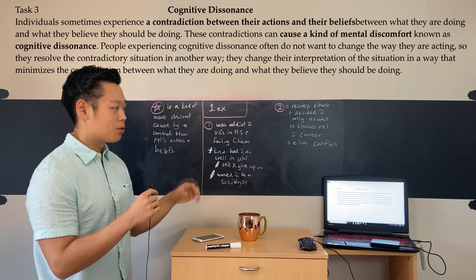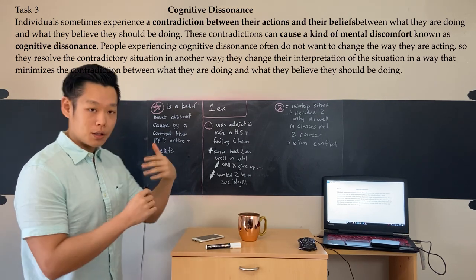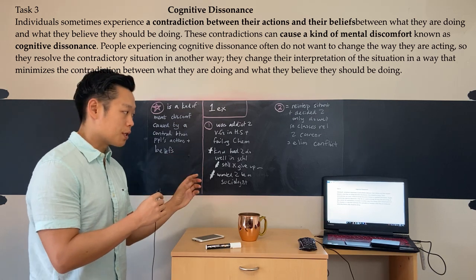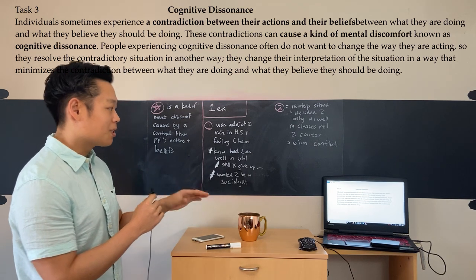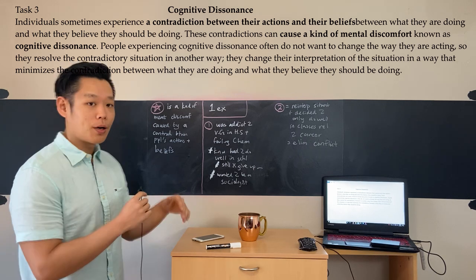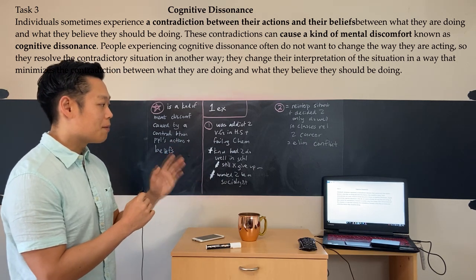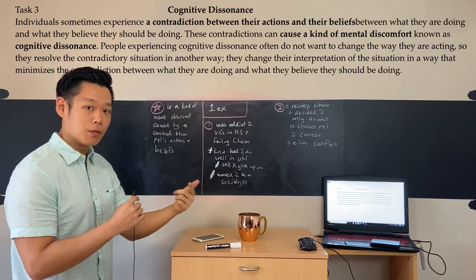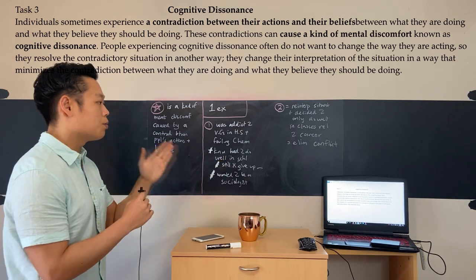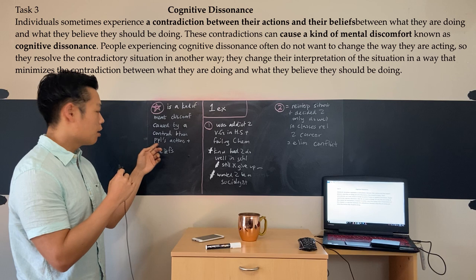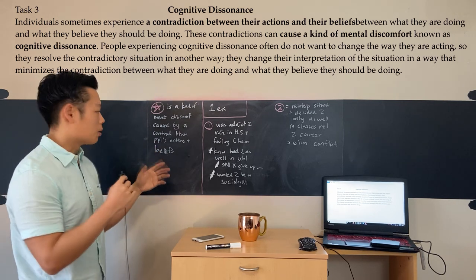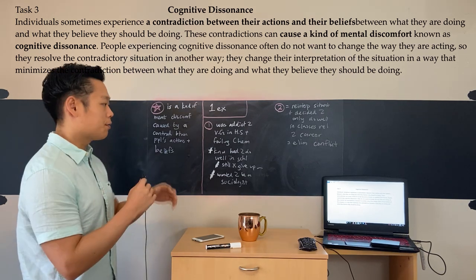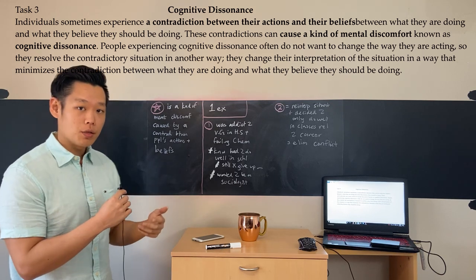We had to read the first and second sentences together to extract the definition. 'These contradictions' in the second sentence refers back to the contradiction mentioned in the first. The key is paraphrasing: change 'their actions' to 'people's actions' so the pronoun has a clear modifier, then combine it with 'and their beliefs.'